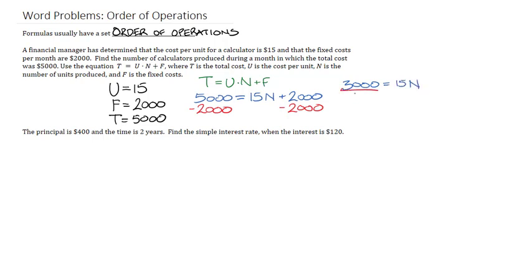I then get 3,000 is equal to 15n. And then, of course, I divide both sides by 15. And if I do that, I get that n equals 200. So what this means, in real world speak, is that in order for these costs to have happened in this scenario, I would have to have produced 200 units.